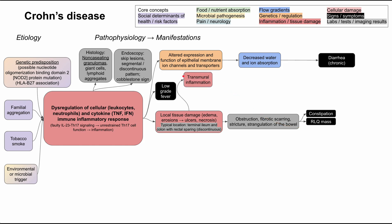Another characteristic of Crohn's disease is transmural inflammation — ulcers go all the way through the wall of the bowel. Because of this, sinus tracts inside the bowel can entrap bacteria. It's normal to have bacteria in the gut, but with this level of inflammation, bacteria can enter the sinus tracts, get caught, and create an abscess as they continue to grow.